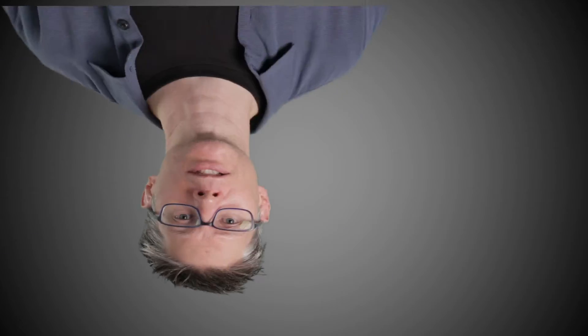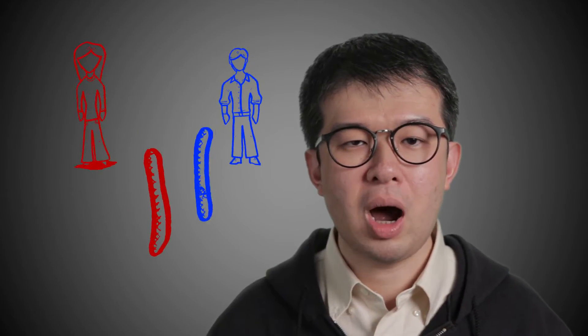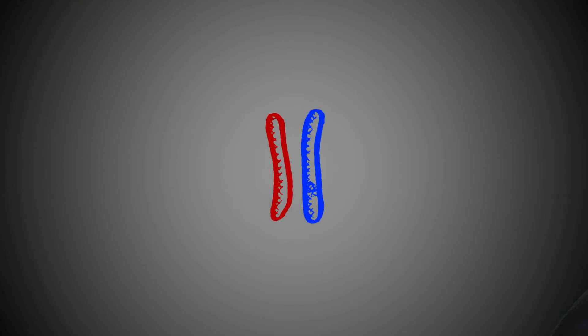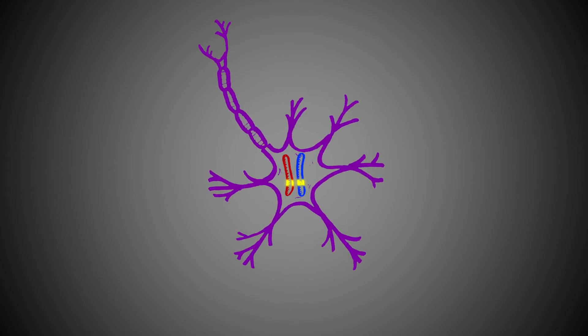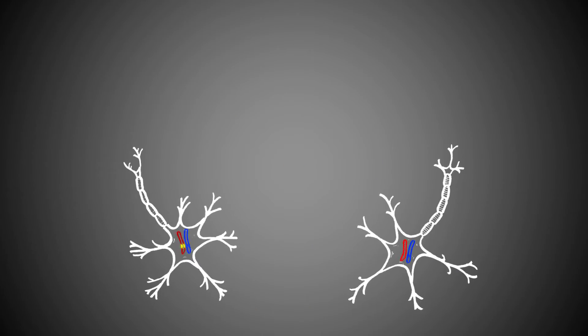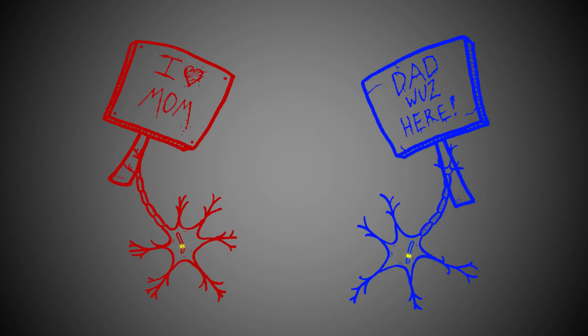Our new research flips the conventional model of brain genetics on its head. Most genes in our brain have two copies, one inherited from our mother and one from our father. Scientists have generally thought that most cells express maternal and paternal alleles similarly, but it turns out that things are not that simple for many genes. Some neurons choose your mom's genes, others choose your dad's.